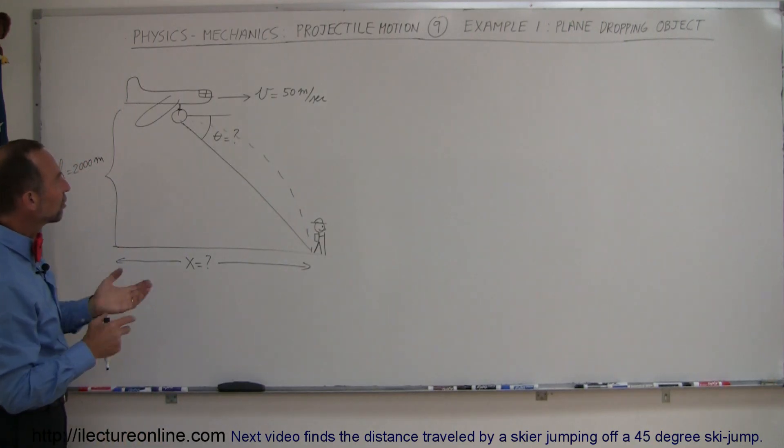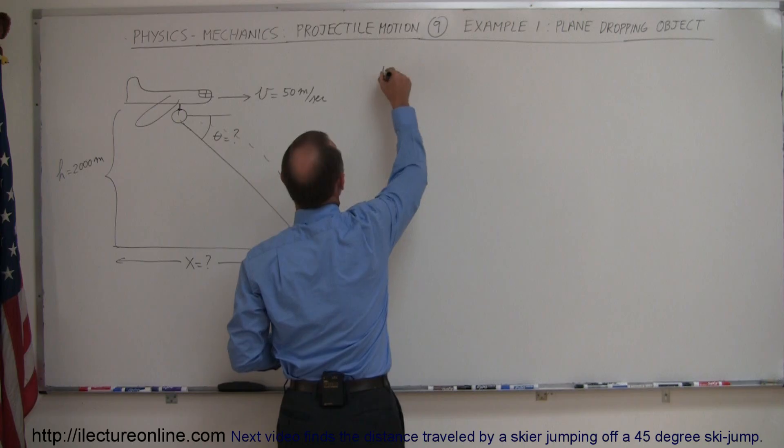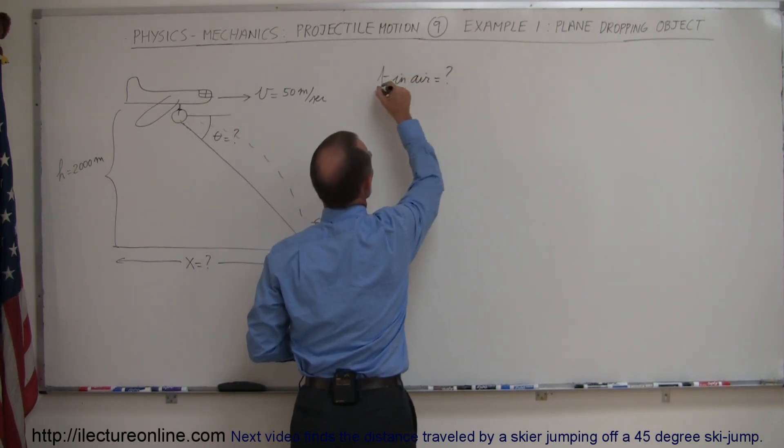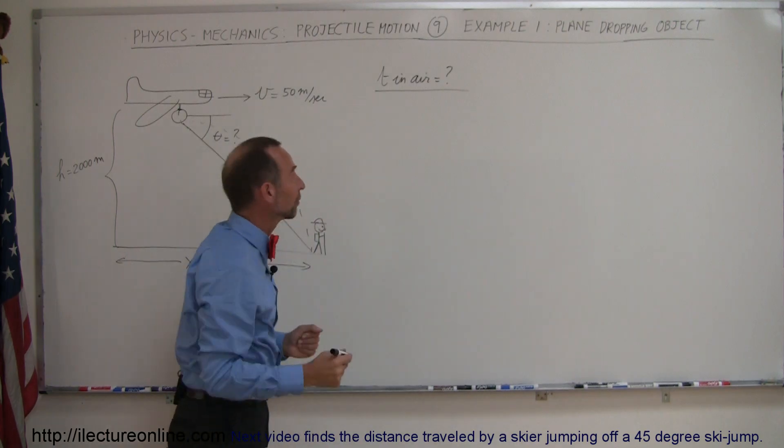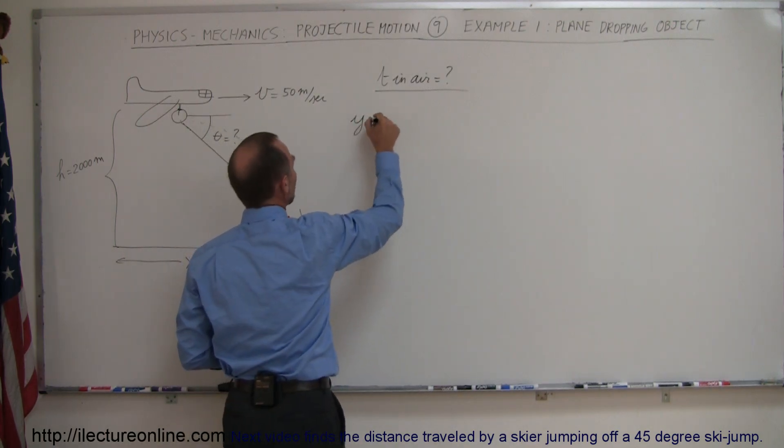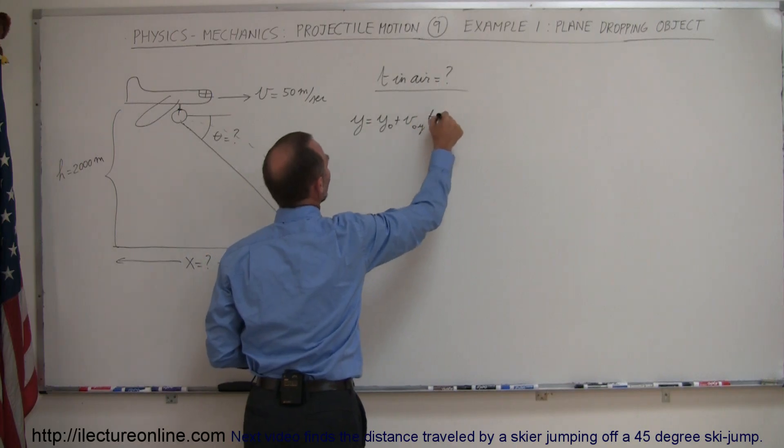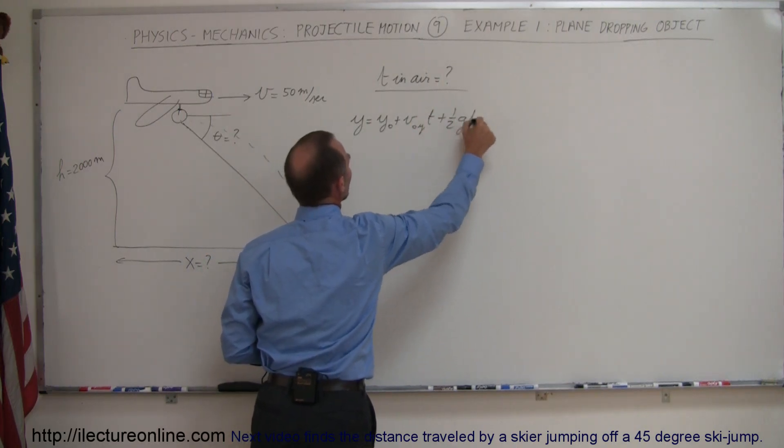Since there is no initial velocities in an angle away from either horizontal or vertical, we don't have to find the components, so we can go right into the approach saying time in the air equals question mark. Let's find the time in the air, and of course the equation for that is y equals y sub-naught plus v sub-naught in the y direction times time plus one-half g t squared.